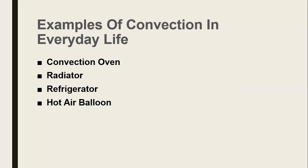Convection ovens use convection currents as the means of heating things. Radiators and refrigerators also use the same concept of convection. Hot air balloons also use convection currents, where there is heat transfer among the particles inside the balloon.